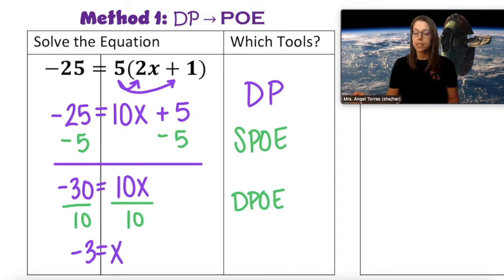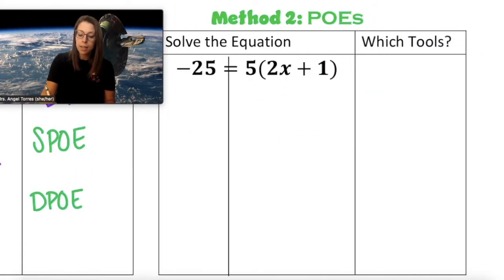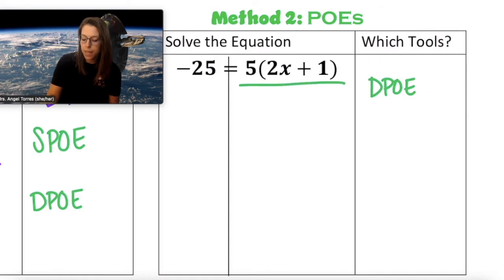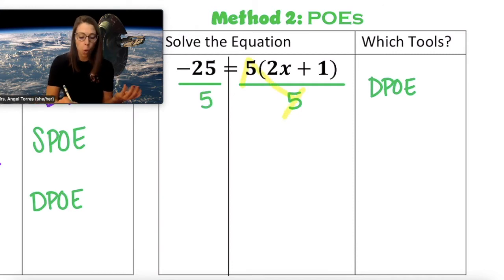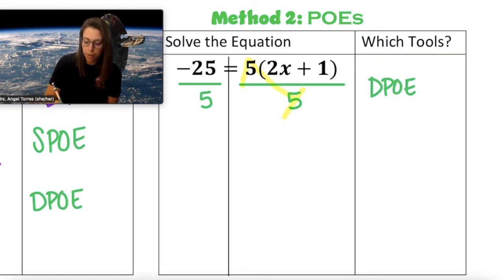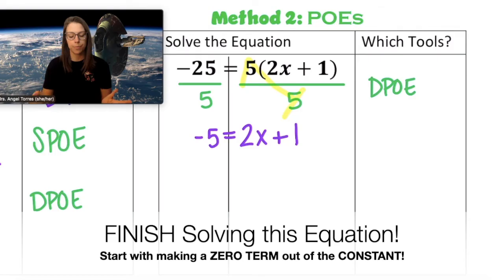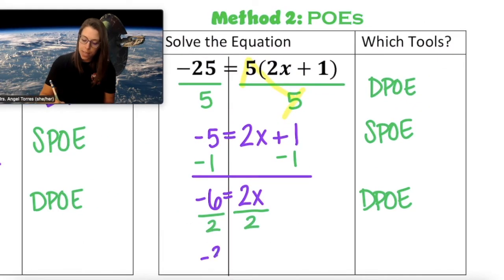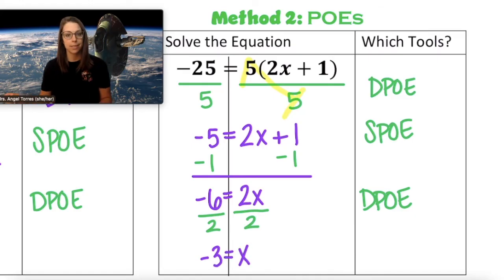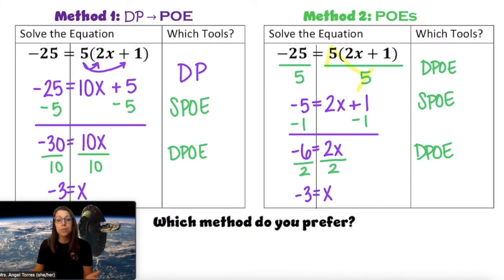Instead of checking, let's solve this same equation again using only properties of equality. Starting with my line down the middle of the equal sign, this time instead of the distributive property, I'm going to start off with division — DPOE — and divide both sides by 5 to create that big 1 factor. The 5 and the divided by 5 create 1, and I'm left with whatever is inside of the group, which is 2x plus 1. Negative 25 divided by 5 is negative 5, and negative 6 divided by 2 is negative 3, and 2x divided by 2 is 1x. Since we ended up with the same solution in both methods, it really doesn't matter which one you use. So which method do you prefer?